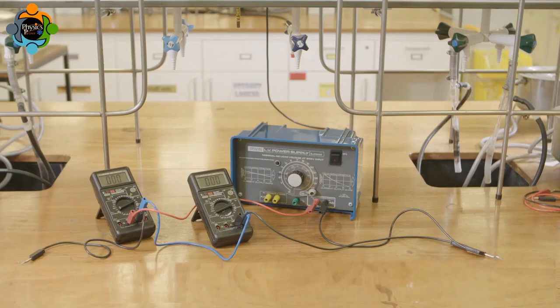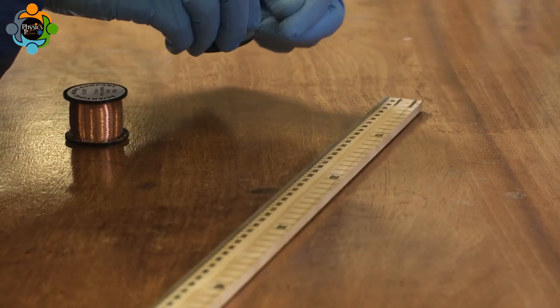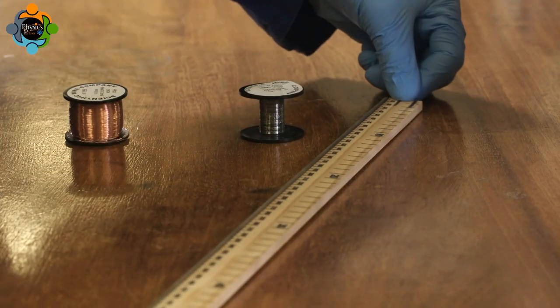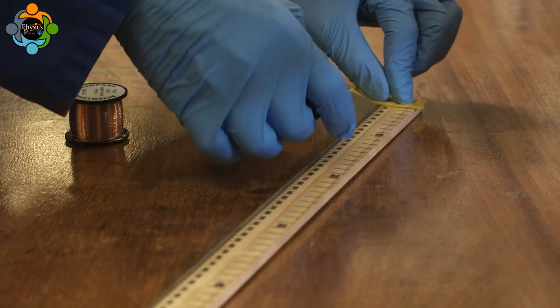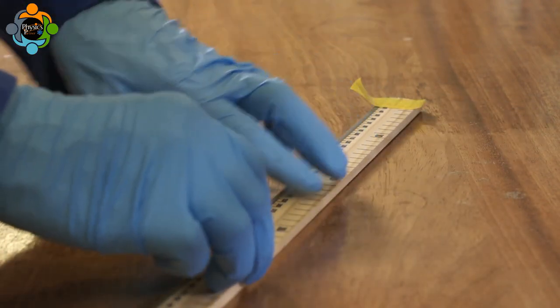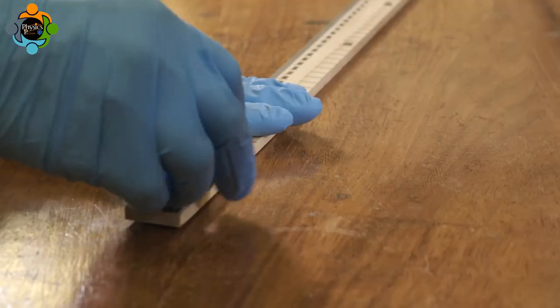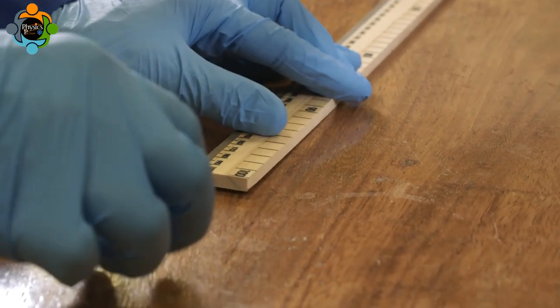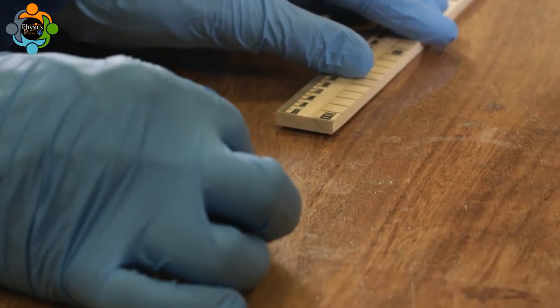It is important to only change one variable at a time. The first of these will be the wire length. A 110 centimeter length of 0.32 millimeter copper-nickel wire is measured and cut.